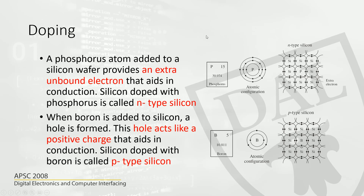When we dope silicon with phosphorus, silicon has four electrons on the outermost shell and these four electrons make a covalent bond with the phosphorus atom. However, there is one extra electron present in the phosphorus atom that is available as a free electron for the conduction process. Because it has an additional negative charge, we call it an n-type semiconductor.